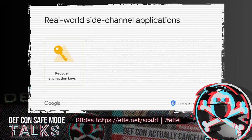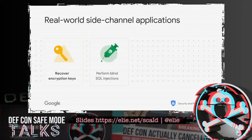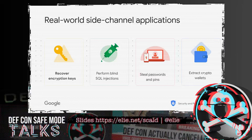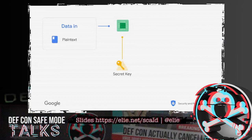As discussed in this talk, side-channel attacks are used to recover encryption keys out of hardware secure implementations. They are also used in web security to perform blind SQL injection, to steal passwords and PINs from secure implementations, and as mentioned in the earlier example, to recover crypto wallet private keys. Basically, whenever you need to infer something you cannot directly observe, such an attack is usually the way to go.